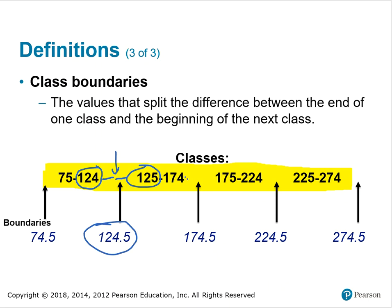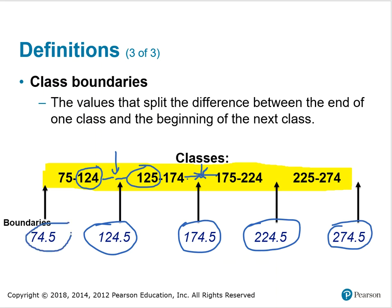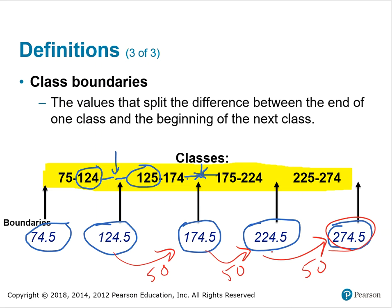Continuing in the same manner — adding the upper and lower class limits of adjacent classes and dividing by 2 — we find the class boundaries for each class. For the last and first class boundaries, where there is no adjacent class on one side, we use the class width. Since the class width is 50 and each difference between boundaries is 50, we add 50 to the preceding boundary to find the last one, and subtract 50 from 124.5 to find the first. That's how you find class boundaries.